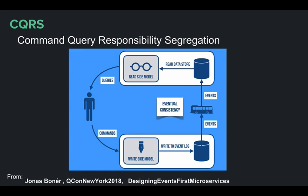CQRS — Command Query Responsibility Segregation — is about separation of concerns between your write side and read side, which is exactly what we saw. Commands come in, they go into a system which is eventually consistent with the read side. I implemented this with Elasticsearch for the read side, DynamoDB for the write side, and a stream in between that keeps them eventually consistent. You can scale them independently, and it's great for distributed systems — trying to have everything distributed and consistent is like CAP theorem. You're much better off not trying to be perfectly consistent and building your application logic around that fact.